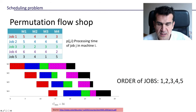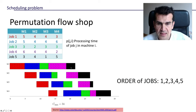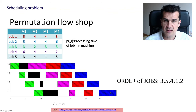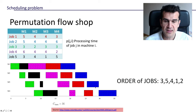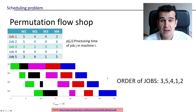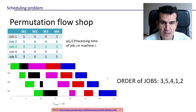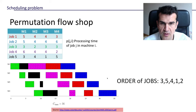What we would like to do is to find an order that minimizes the time it takes us to process the five jobs. That time for this order is 34 time units. And what we can see is that if we change the order — for instance, if we sort the jobs according to the sequence three, five, four, one, two — then the time it takes us to process all the jobs is greater: it would be 36. So basically the order in which we process the jobs in a permutation flow shop can have an influence on how long it takes us to process all the jobs.